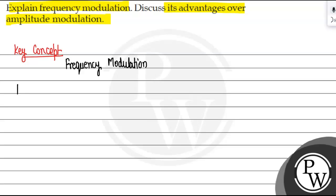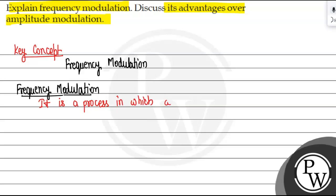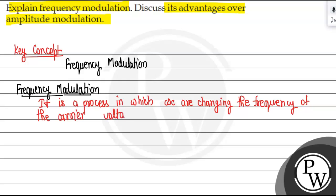So what is frequency modulation? It is a process in which we are changing the frequency of a carrier voltage in accordance with the instantaneous value of the modulating voltage.